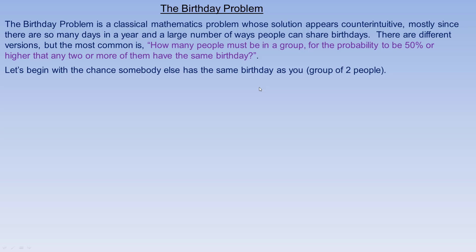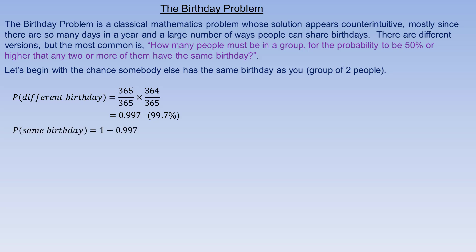Let's say you and another person. The probability that any two people have a different birthday: the first person has one of the 365 possible days as a birthday, and the second person would have a different birthday, so they only have 364 choices. The product of these two probabilities is 364/365, which works out to 0.997, or about 99.7% that they have different birthdays. So the probability that they have the same birthday would be 1 minus that, or about 0.3%.